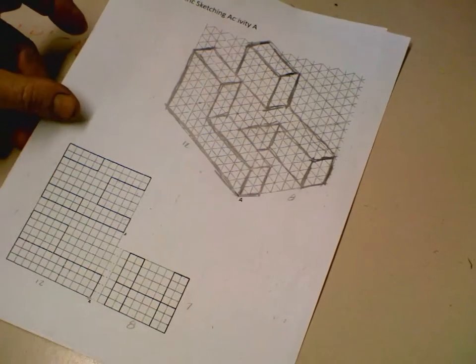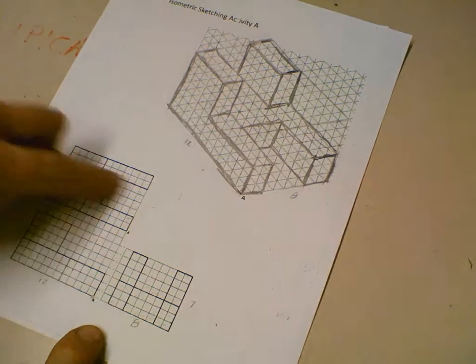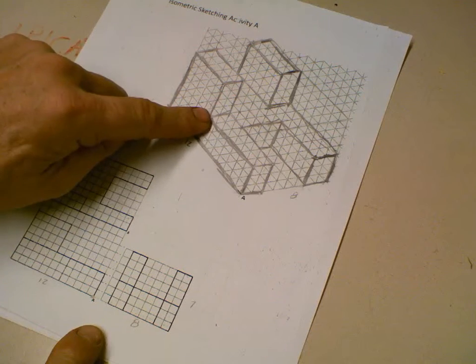I'm going to show you the activity A first. This is the one we did in A. Notice there's grid, the orthographic is gridded out, and you can just count the grids to match it here.